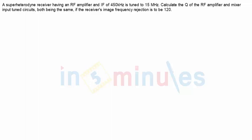Hello everyone, welcome to In 5 Minutes. In this video clip, we will do one question based on superheterodyne receiver and image frequency rejection ratio. The question is: a superheterodyne receiver having an RF amplifier and IF of 450 kilohertz is tuned to 15 megahertz.